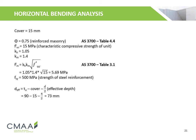A cover of 15 mm is used. The capacity reduction factor φ is 0.75 for reinforced masonry, using Table 4.4 of AS3700. The characteristic compressive strength of masonry F'm is calculated to be 5.69 MPa using Table 3.1 of AS3700. The strength of steel reinforcement Fsy is 500 MPa. The effective depth — the distance between the centre of reinforcement and the face of the blockwork — is calculated to be 73 mm.